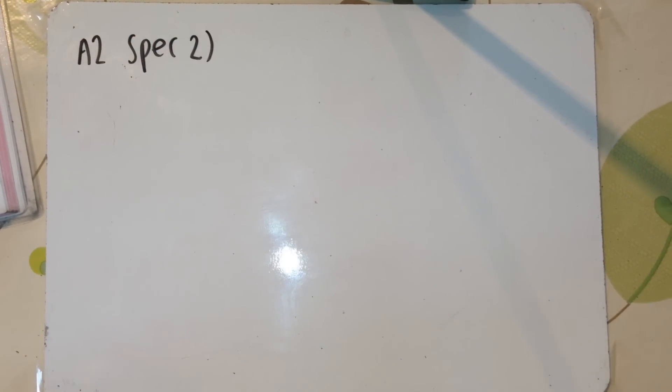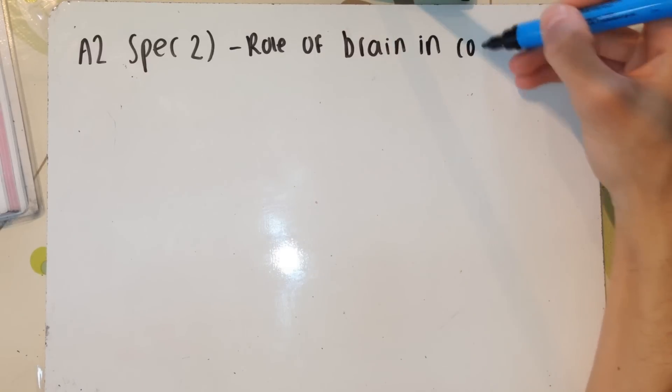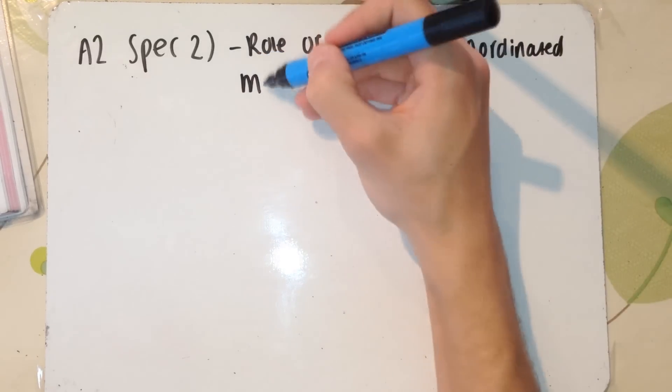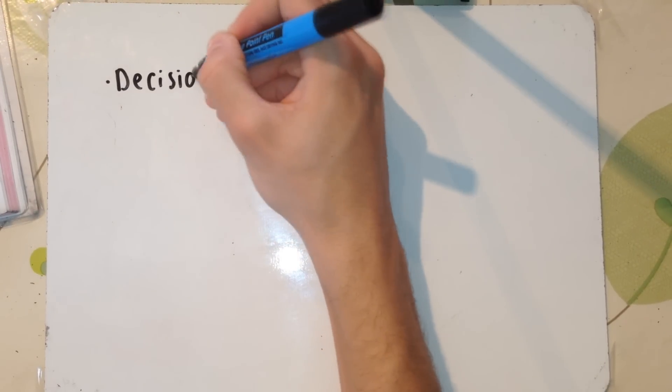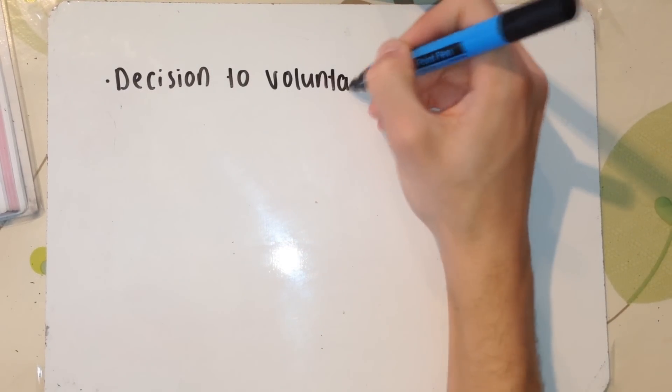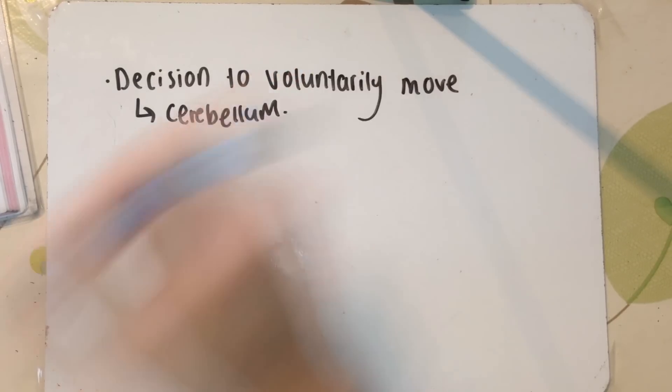Right, so the next part of the specification on the brain is describe the role of the brain and nervous system in coordinated muscular movement. So how do the brain and the muscles move together? So really what happens is the decision to voluntarily move, for example, I'm going to move my hand right now, that decision to move was made in my cerebellum.